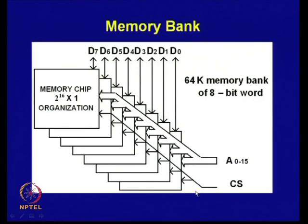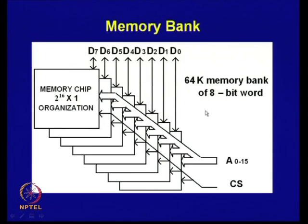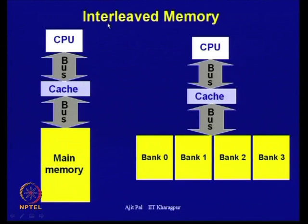A typical memory bank has chips organized as 2^16 × 1 — bit-organized chips. The address and chip select signals are transferred simultaneously to all chips, so all of them will be ready at the same time to provide data on the data bus. This 64K memory bank of 8-bit width can be extended to realize multiple interleaved memory banks.